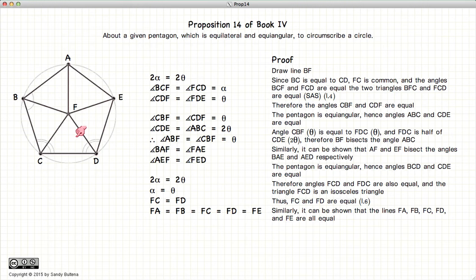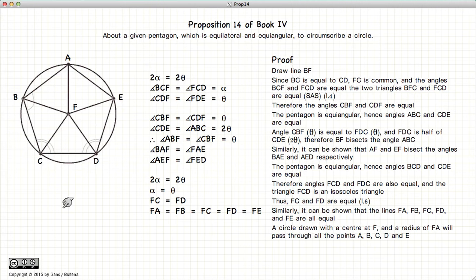So all these lines are equal in length and thus if we draw a circle with f as the centre and any one of these lines as its radius it will pass through all the points. And thus we have shown that this circle passes through all the points of the pentagon.